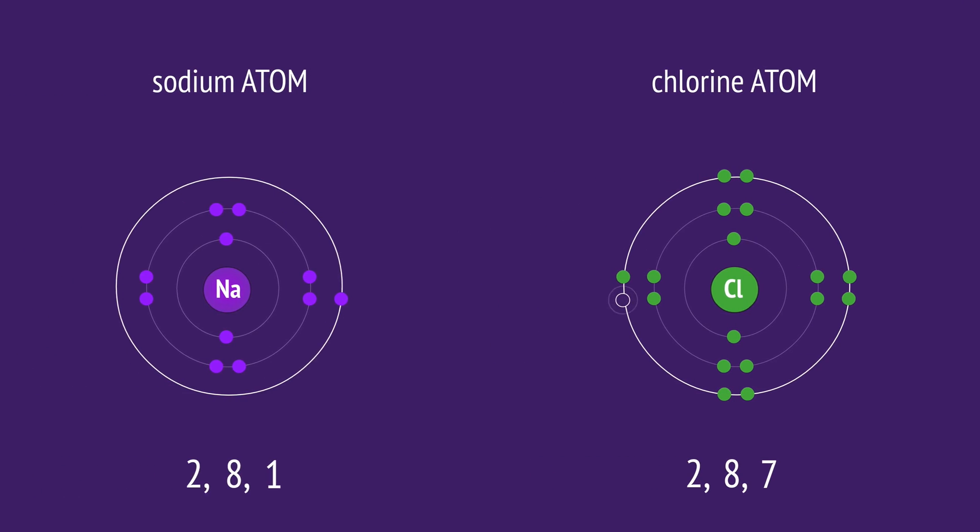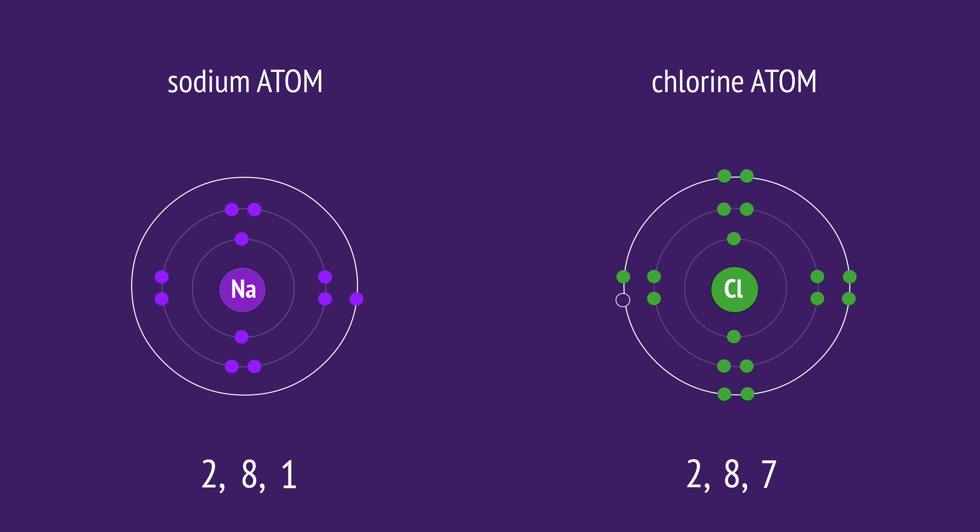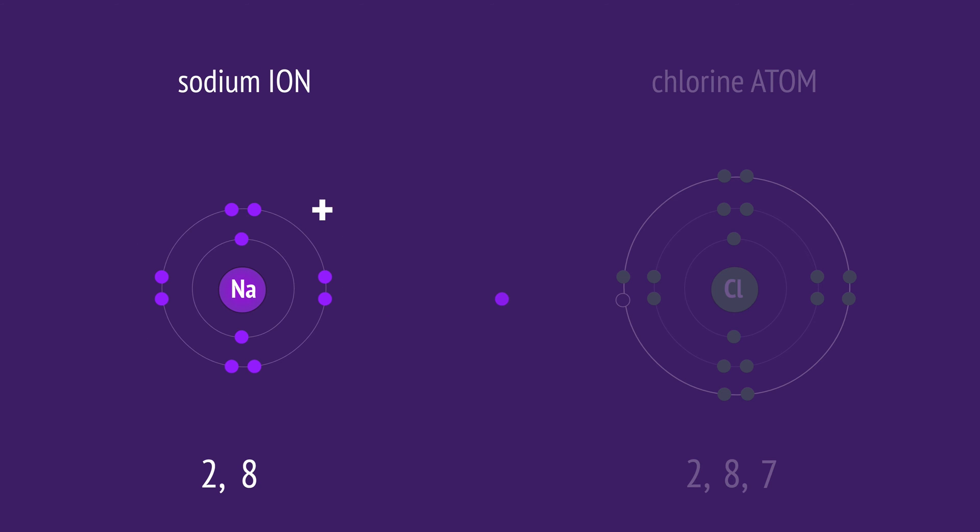Both atoms are looking to achieve a full outer electron shell. Sodium achieves this by giving up its outer electron. In doing so, it forms a sodium ion with a 1 plus charge, since it now has one more proton than it has electrons.